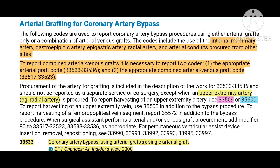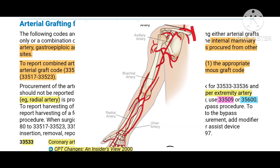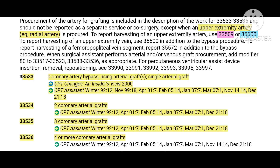Whenever arterial and venous grafting is done together, you have to report separate codes for the venous grafts along with the arterial codes. If an artery is taken from any other part of the body, no additional code is needed — except when an artery is taken from the upper extremity, such as the radial artery, axillary artery, or brachial artery. In that case, report a separate harvesting code: 33509 for endoscopic, or 35600 for open procedure.